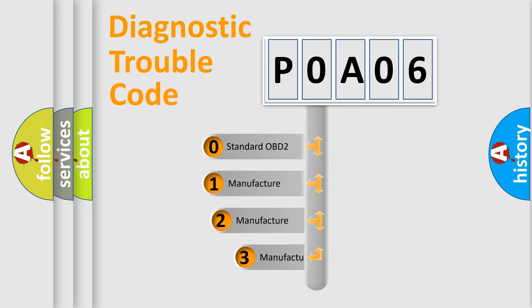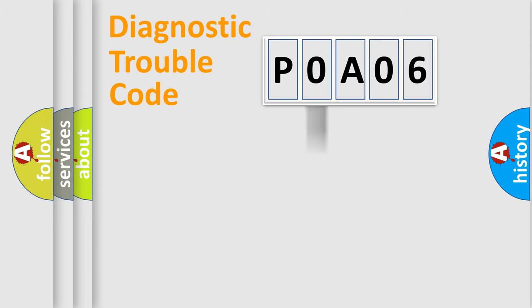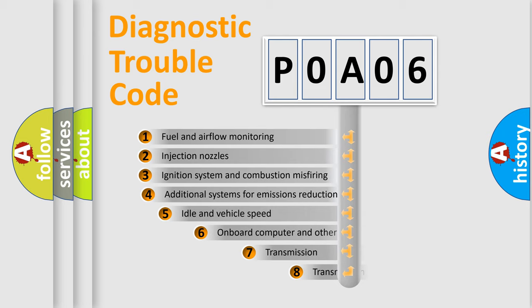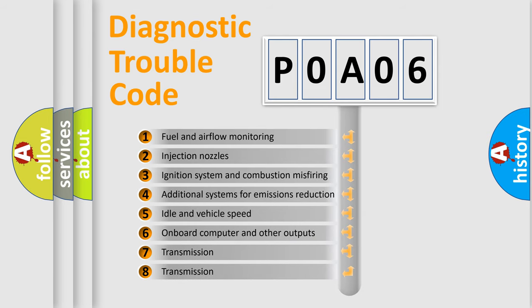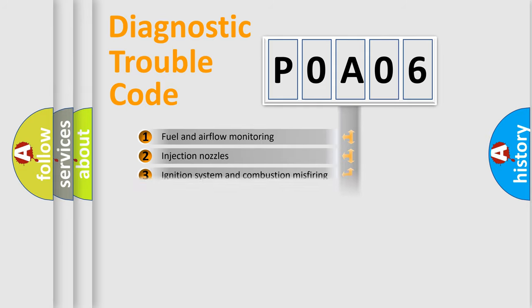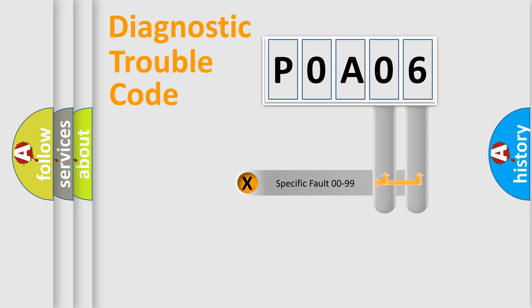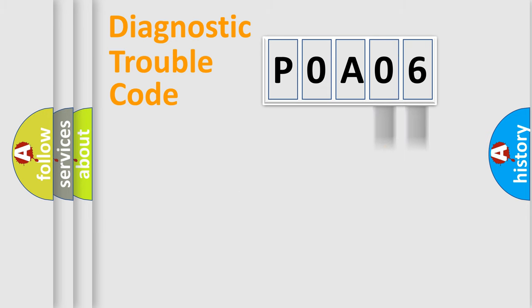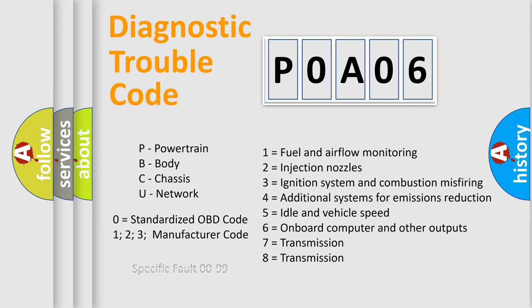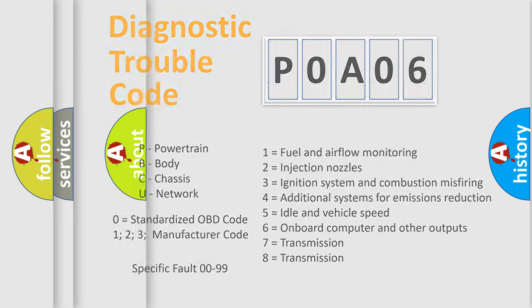If the second character is expressed as zero, it is a standardized error. In the case of numbers 1, 2, or 3, it is a more specific expression of a car-specific error. The third character specifies a subset of errors. This distribution is valid only for the standardized DTC code, and only the last two characters define the specific fault of the group. Such a division is valid only if the second character code is expressed by the number zero.